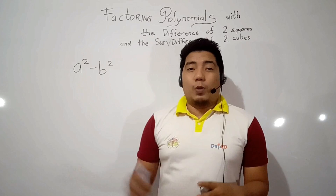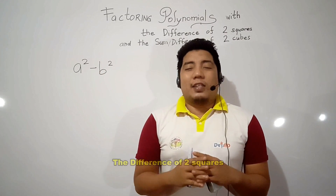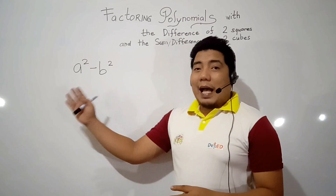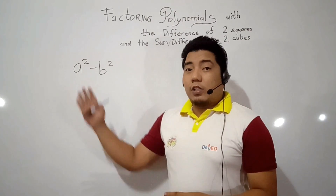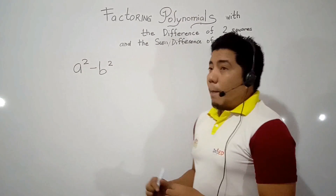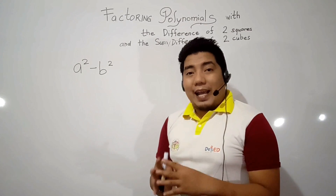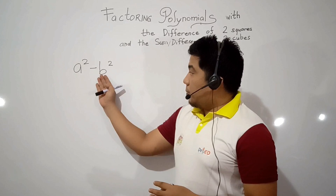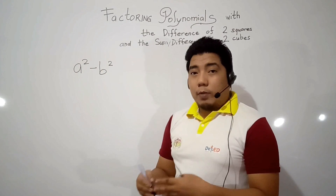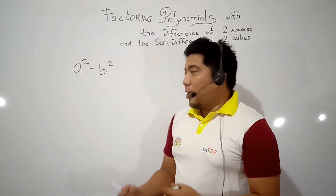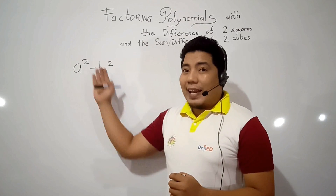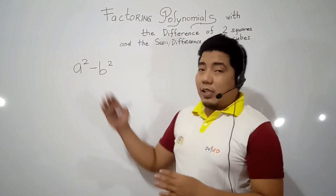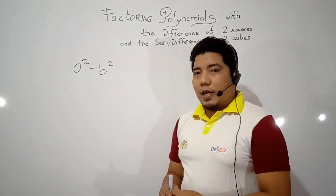This is our standard for the difference of two squares. As you can see, this is an example of a binomial because there are only two terms. If we consider our last video using the common monomial factors, the two terms don't have any common monomial factor. So therefore, we cannot apply our usual factoring here. This is considered as a special product.